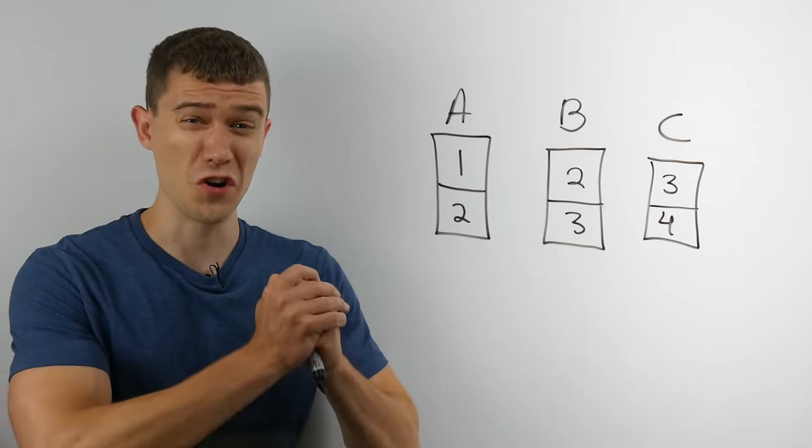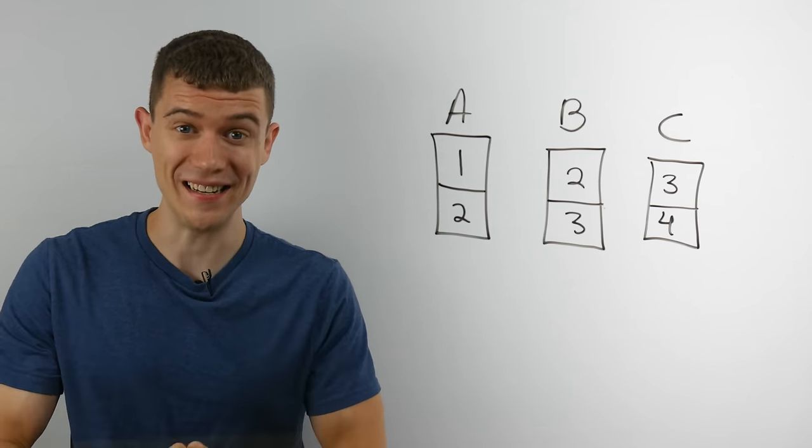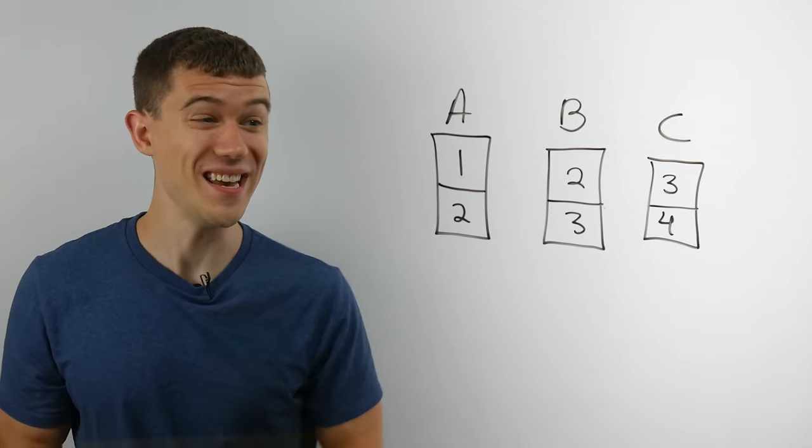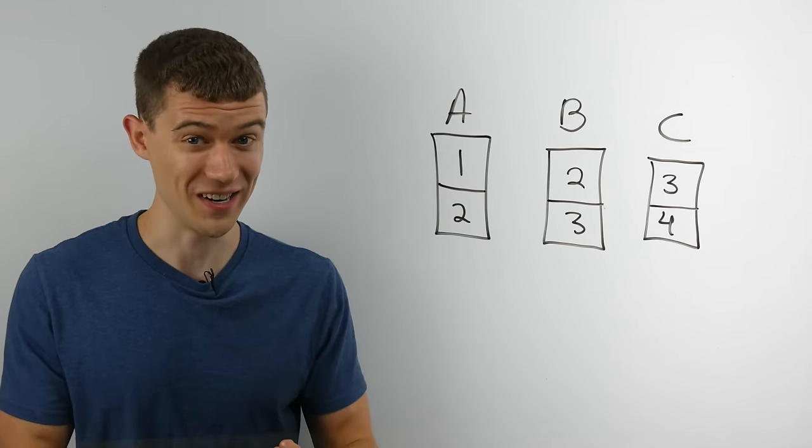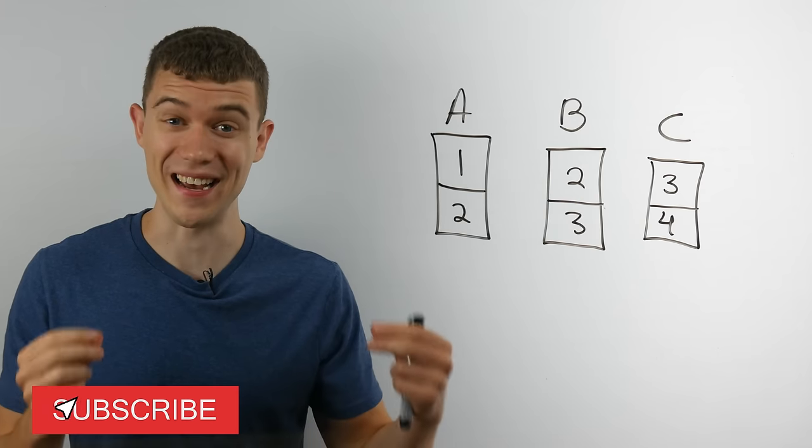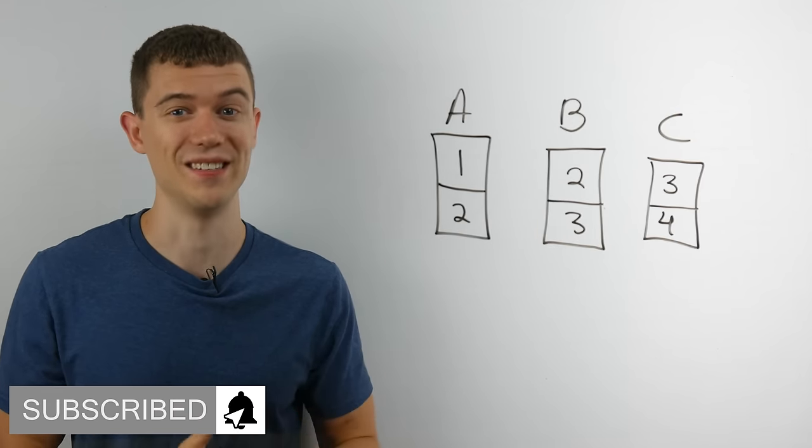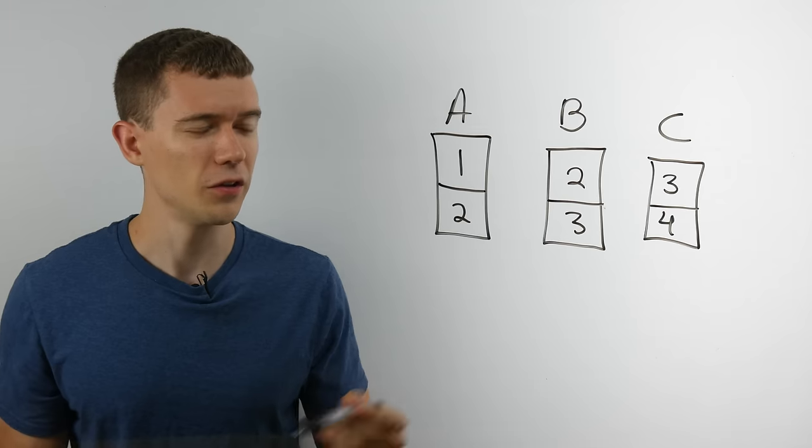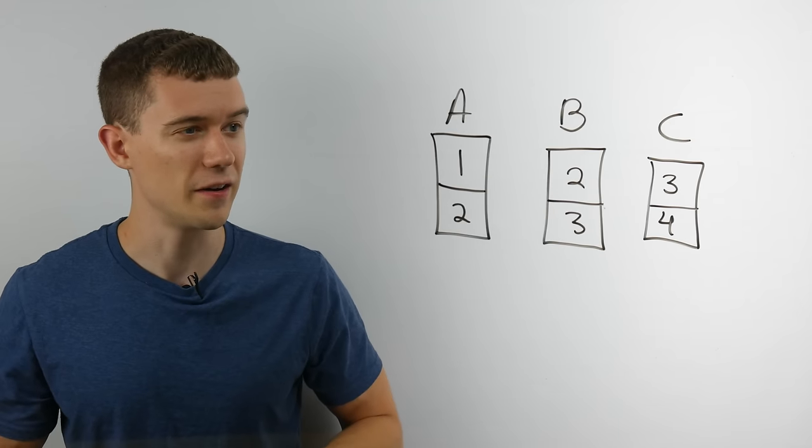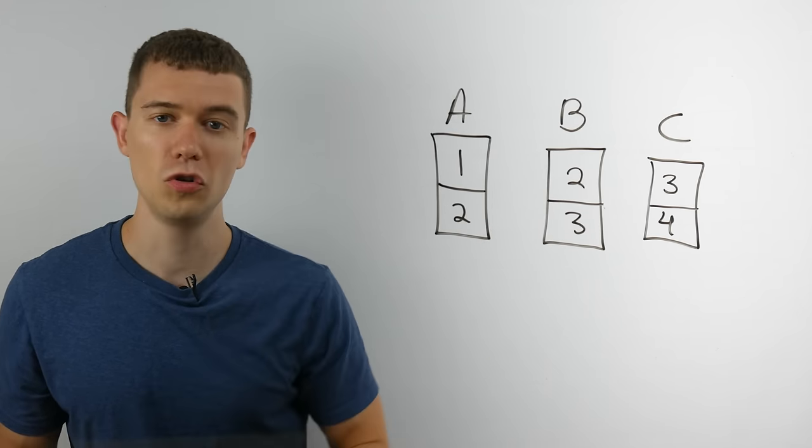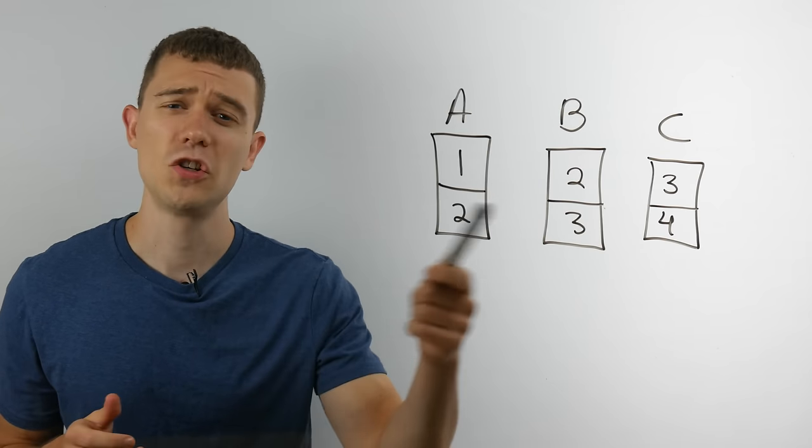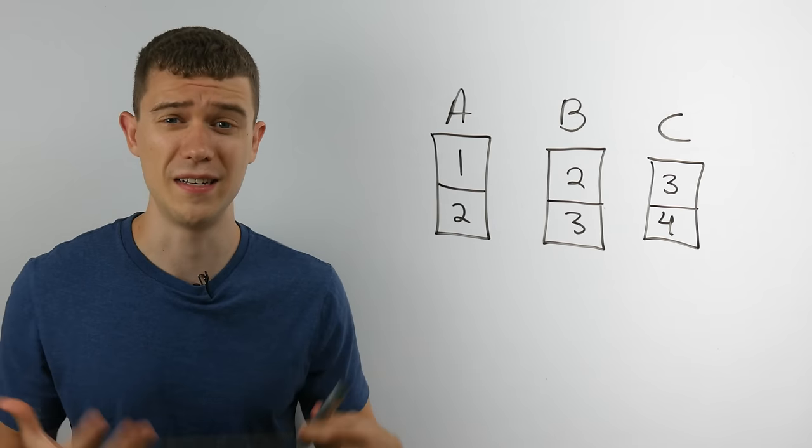So if you guessed card A or card C, you would be right. In fact, if you guessed card B, B has the worst chance of winning and A and C have equal chances to win. Let's think about why this might actually be. Well, you'll notice that this second card here, B, it shares the number two with A and it shares the number three with C. And this sharing of numbers is actually a disadvantage.